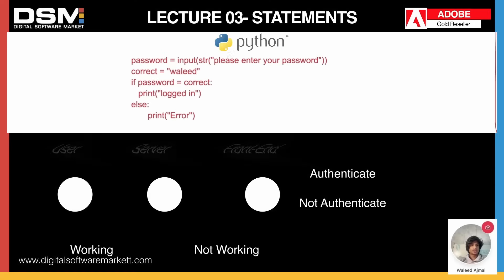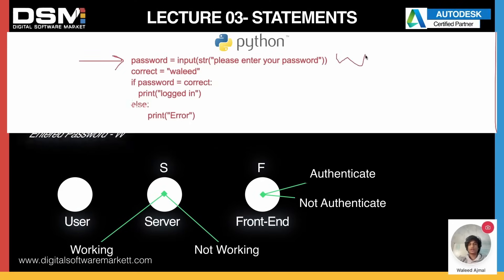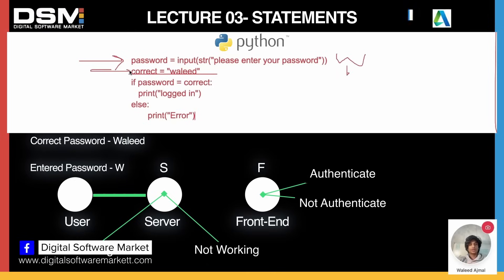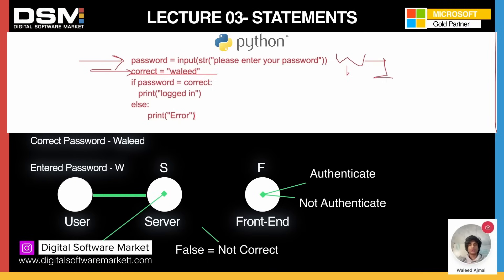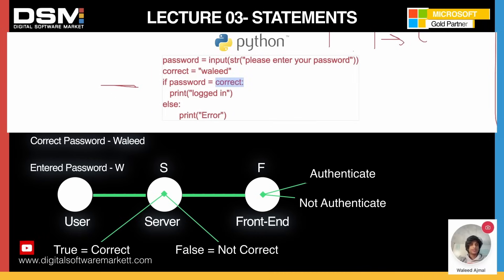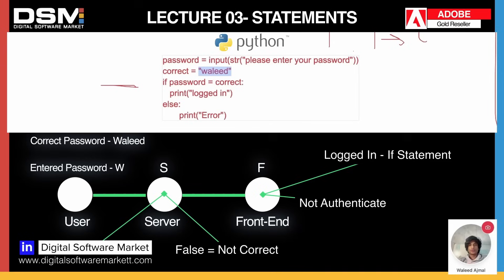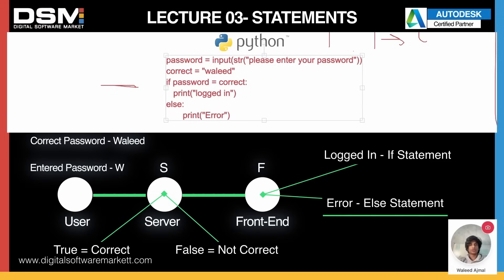Let's review how the program works. It first takes an input from the user — say I input 'w'. It stores that value and then checks: if the entered password 'w' equals correct. The variable correct holds the value we assigned. So it checks 'w' against 'valid' and outputs either 'logged in' or 'error'. In this case it prints 'error' because 'w' doesn't equal the correct password.